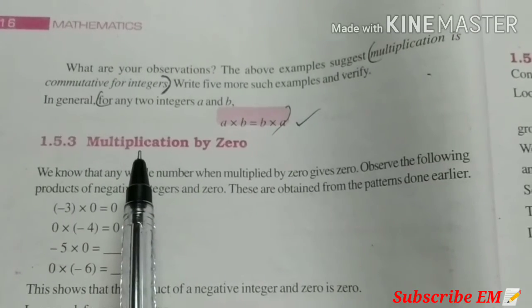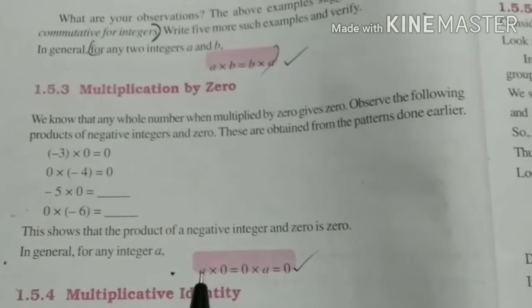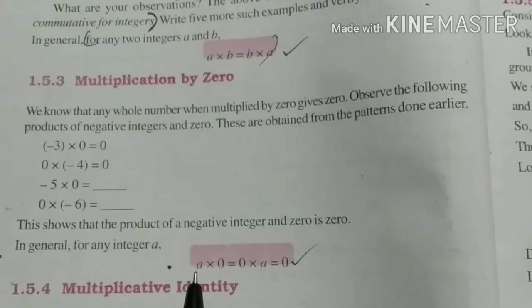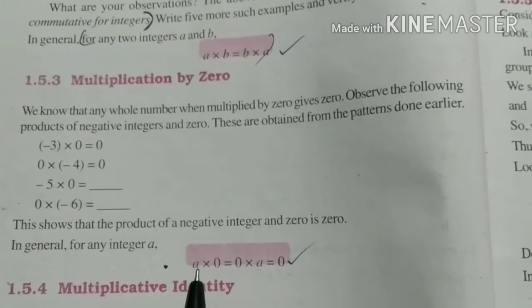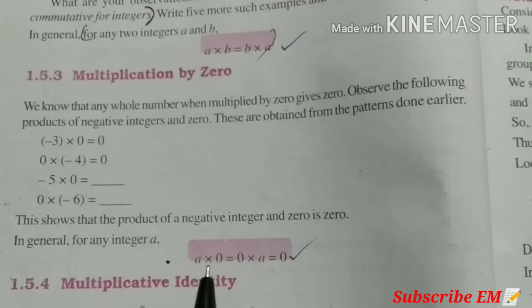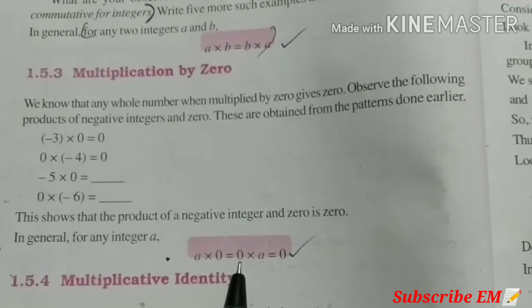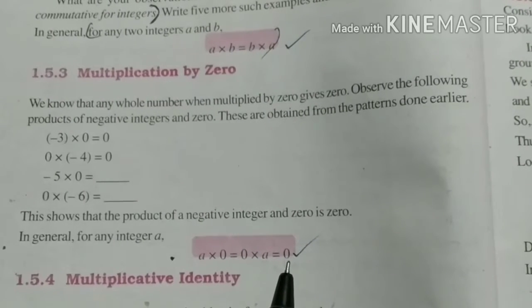Third, multiplication by 0. We all know that any integer multiplied by 0 is 0. So, A into 0 is equal to 0 into A is equal to 0.